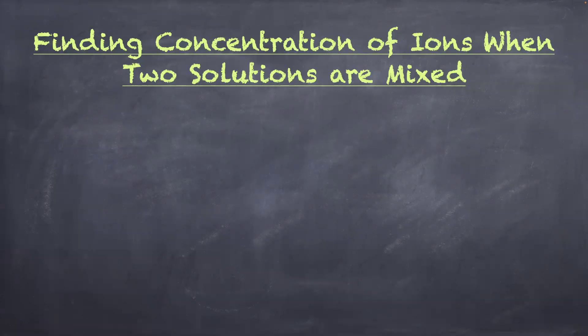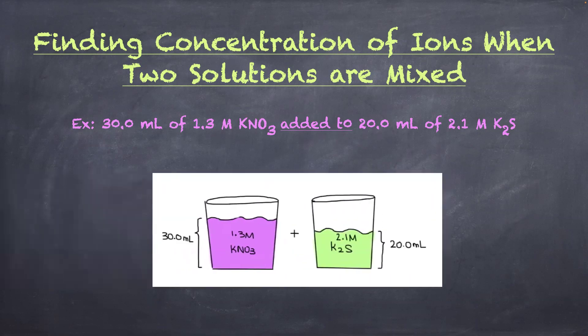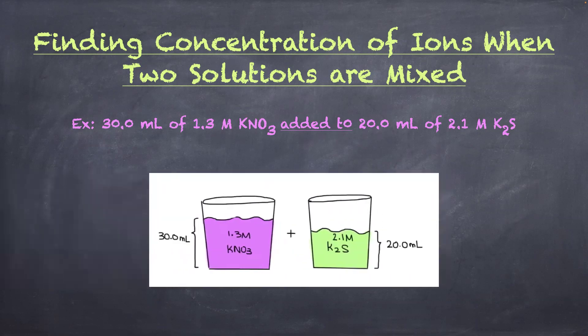Hi everyone. In this video we're trying to find a concentration of ions when two solutions are mixed. We have 30 mL of 1.3 molar KNO₃ and we're adding it to 20 mL of 2.1 molar K₂S, as we can see in this drawing.